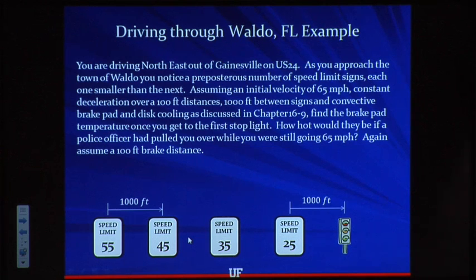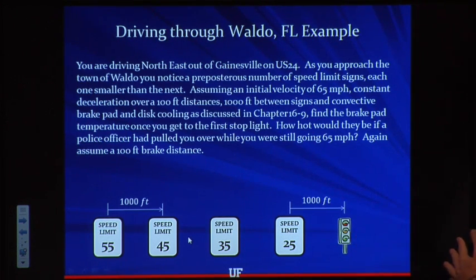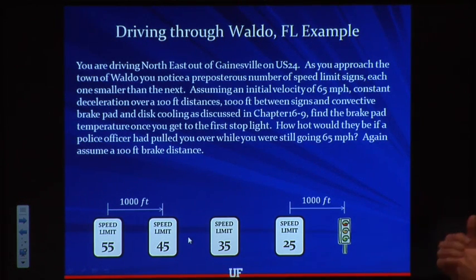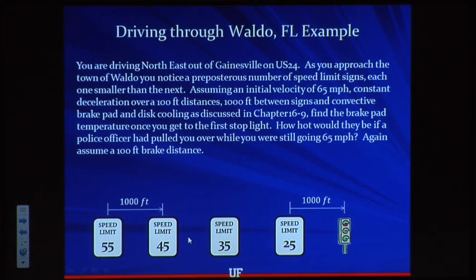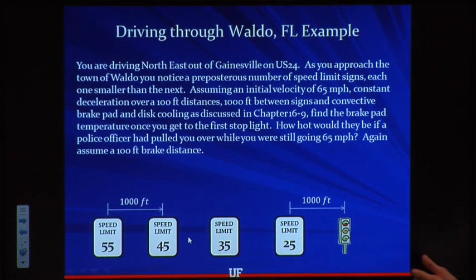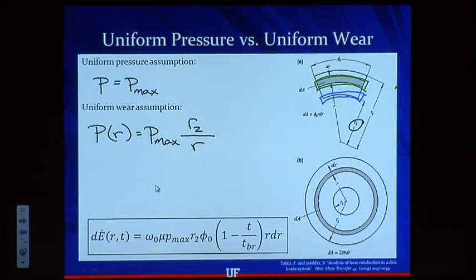Let's consider the difference between going 65 and coming to a full stop versus going 65 and stepping down by 10 miles per hour every 1,000 feet, and see what that does to your brakes. There are 1,000 feet between speed limit changes, and we're going to start applying the brakes 100 feet before we get to the sign. We'll start at 65 miles per hour and step down. We'll have brake heating while stepping on the brake, and then convective cooling for the other 900 feet until we get to the next speed limit change.